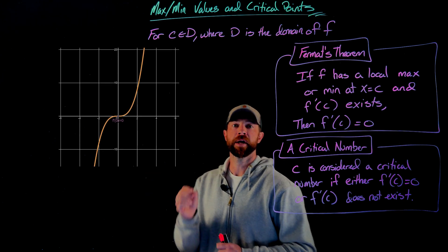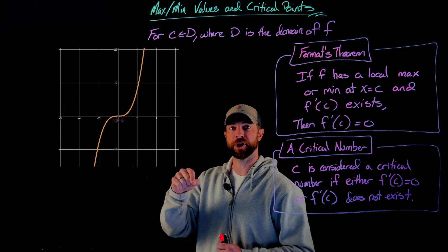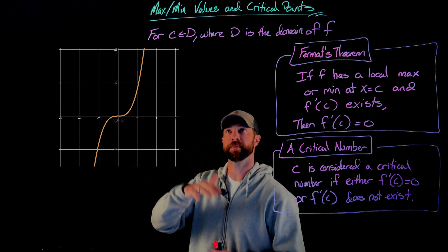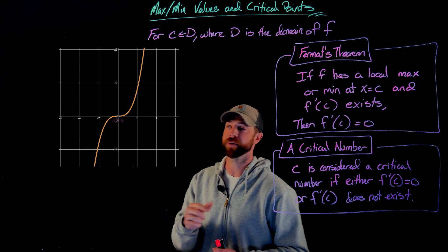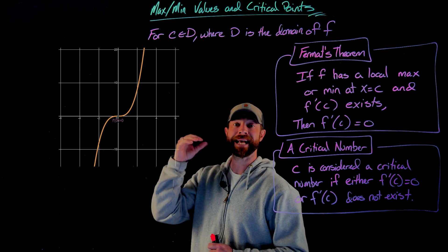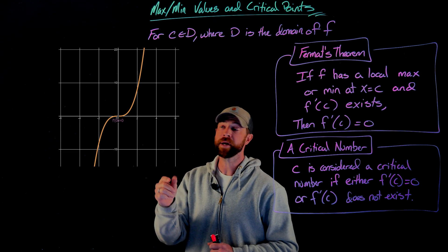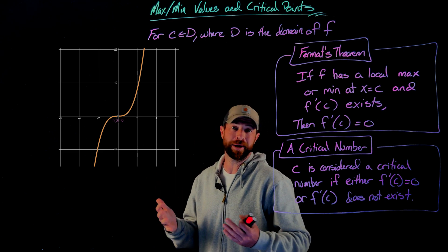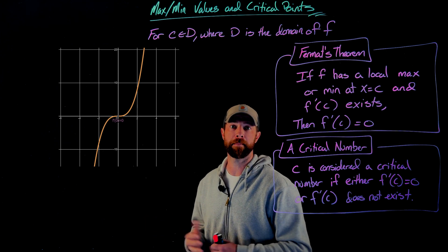Now for x cubed. The derivative at x equals 0 is equal to 0 for x cubed, right? Because x cubed, the derivative would be 3x squared. You plug in a 0, you're going to get out of 0. But in this, so in this case, we would say x equals 0 is a critical number. But as you can see, it's neither a local min nor a local max and therefore it cannot be an absolute or a max or minimum.